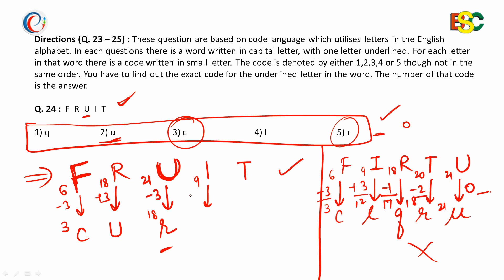Then 9 plus 3 is 12, which is L. Yes, it is also given. Then 20 minus 3 is 17 and 17th letter is Q. And it is also given.